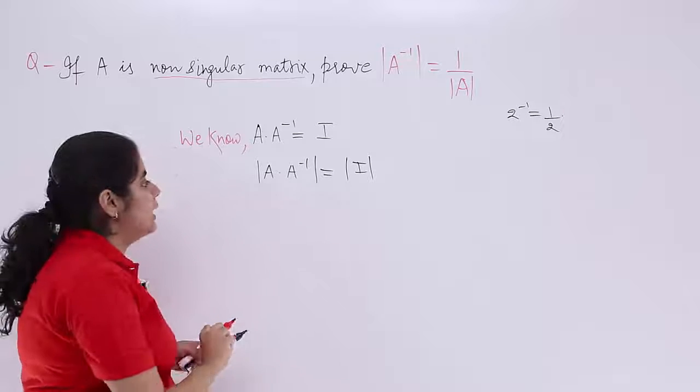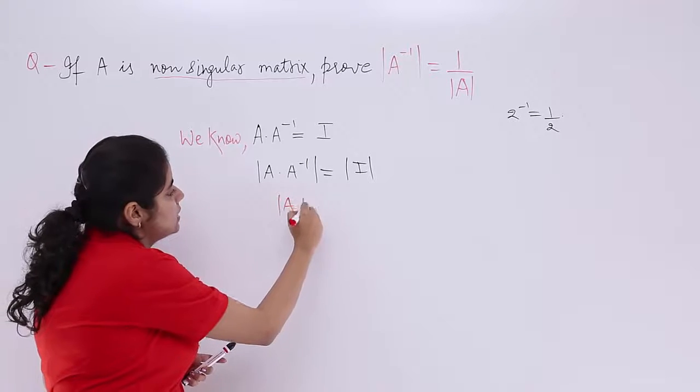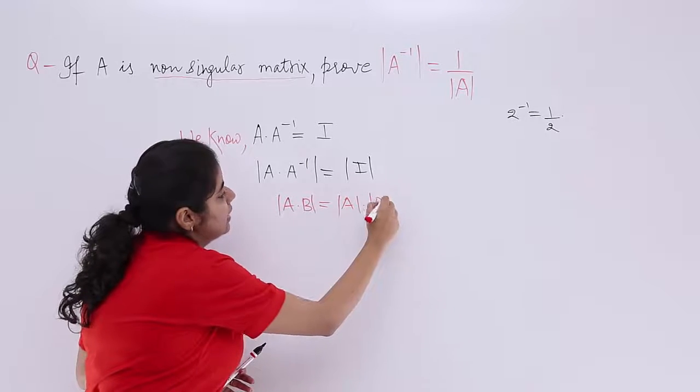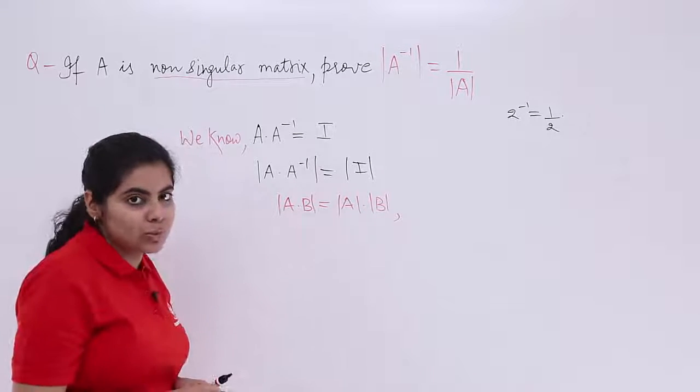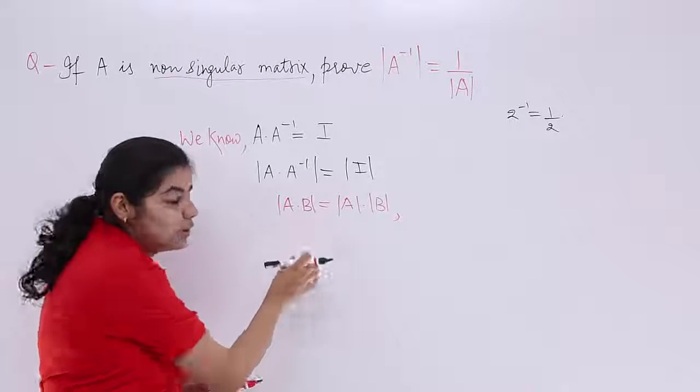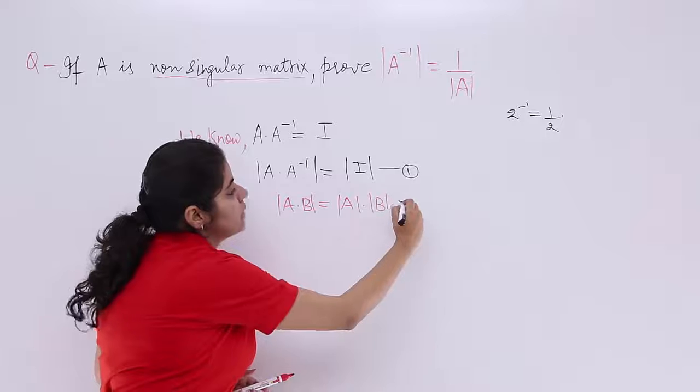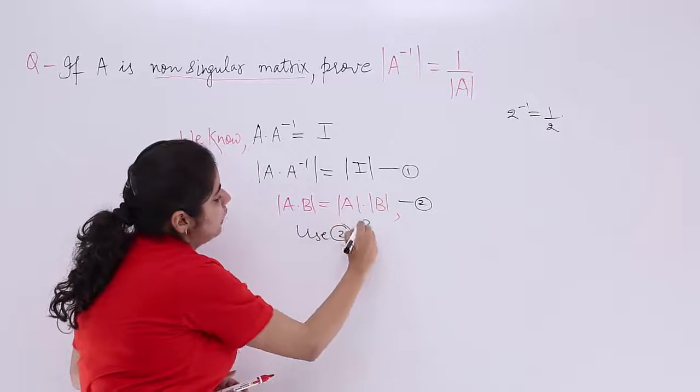Now, I also know that another formula exists which says that you can always separate the determinants. So, you can write it like this. We have used this property in the previous questions also. Since we know this, I can use this in equation 1. If this is equation 2, I can use 2 for 1.